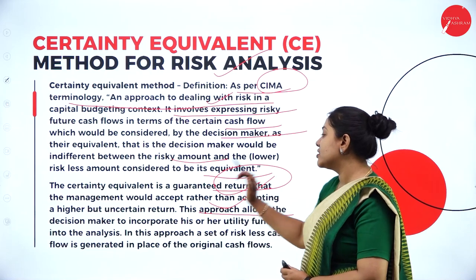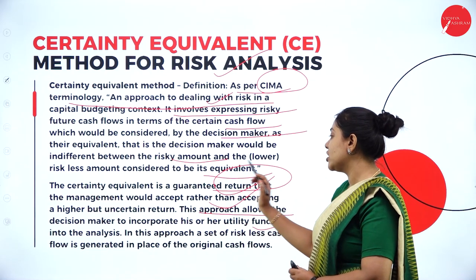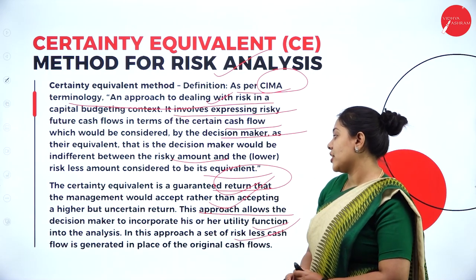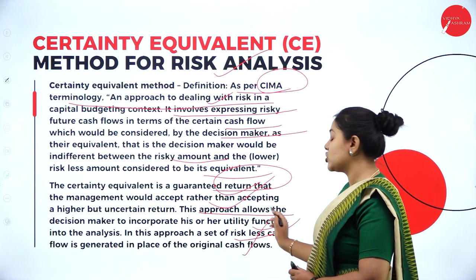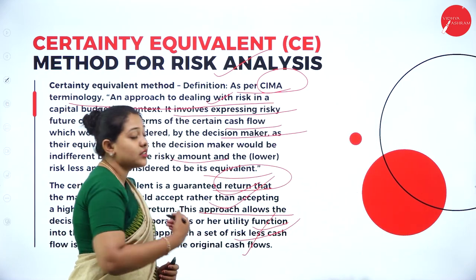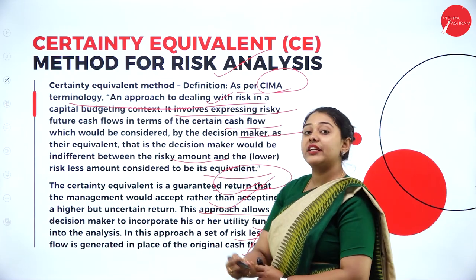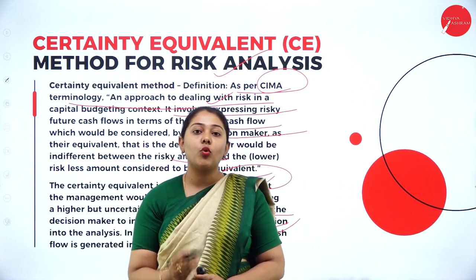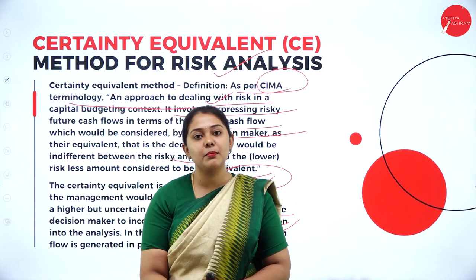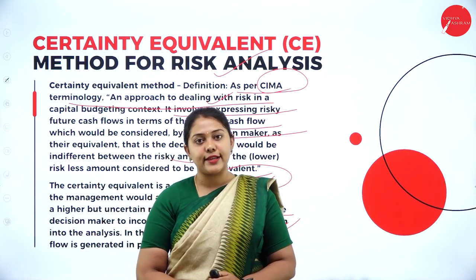This approach allows the decision maker to incorporate his or her utility function into the analysis. In this approach, a set of less cash flows is generated in place of the original cash flows. What happens here is that you get a set of lesser cash flows rather than the original cash flows, because we are analyzing what is the equivalent amount of less risk we are taking. At the same time, the cash flow we get is also less rather than the original cash flow.